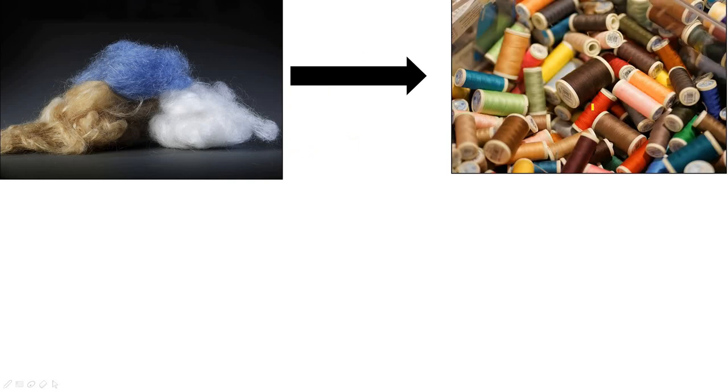These are fibers. We get these fibers from plants, animals, and chemicals. Then these fibers are converted into yarns. These are yarns — you must have seen these yarns at your home. Fibers are converted into yarns by the process of spinning. Several strands of fibers are drawn out and twisted together and they are converted into yarns.